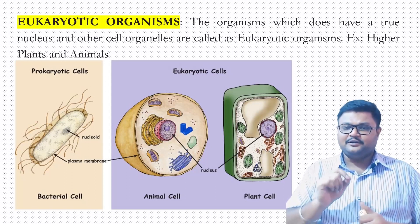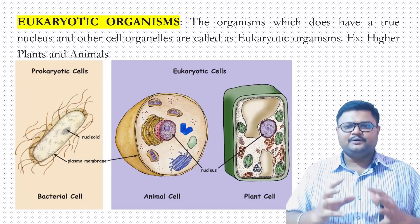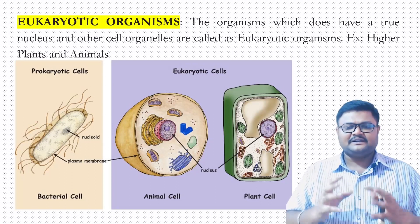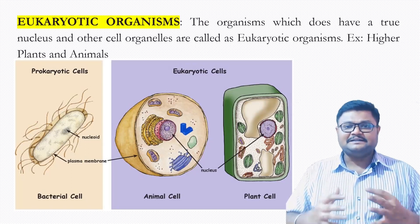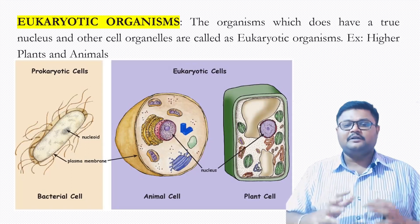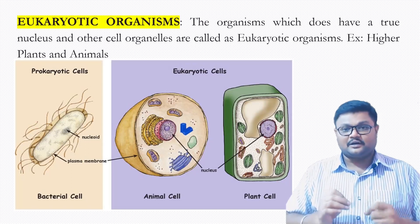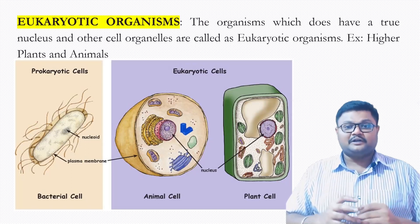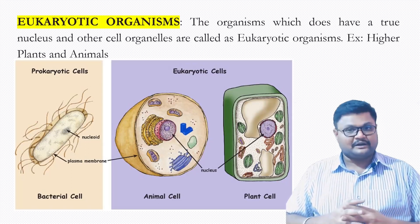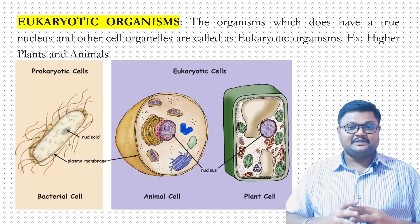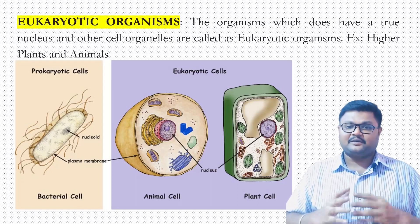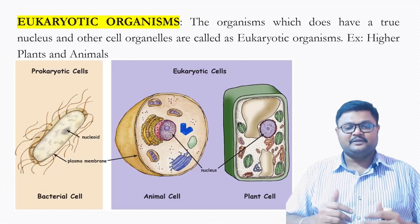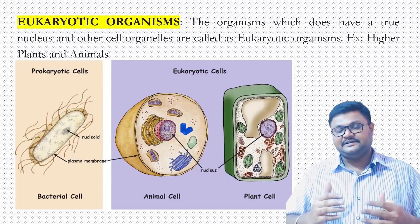The organisms whose nucleus is perfectly organized, perfectly created, and each and every content of it is also well manageably created — these are called eukaryotic organisms. They are also called true nucleus organisms. Examples include the majority of plants, highly developed or higher plants, and the majority of animals, highly developed or higher animals.